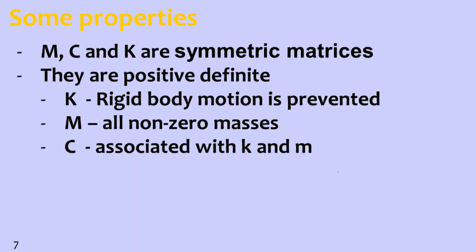There are important properties of these matrices. The mass matrix M, damping matrix C, and stiffness matrix K are all symmetric matrices, meaning K_ij = K_ji. They are also positive definite — the determinant is non-zero and positive. K is positive definite because rigid body motion is prevented. M is positive definite because M1, M2, M3 are real, non-fictitious masses. C is positive definite as it is associated with K and M. All three matrices are symmetric and positive definite because we are dealing with real systems.